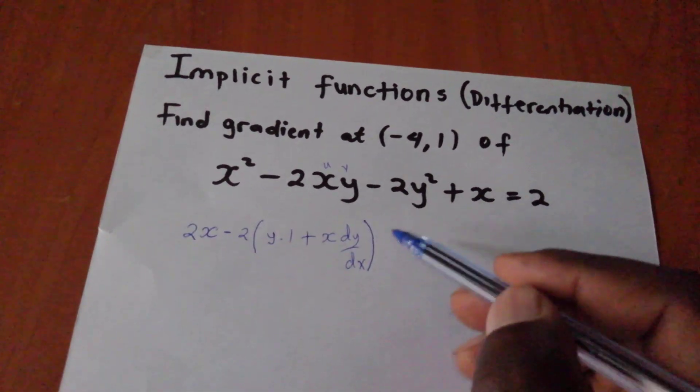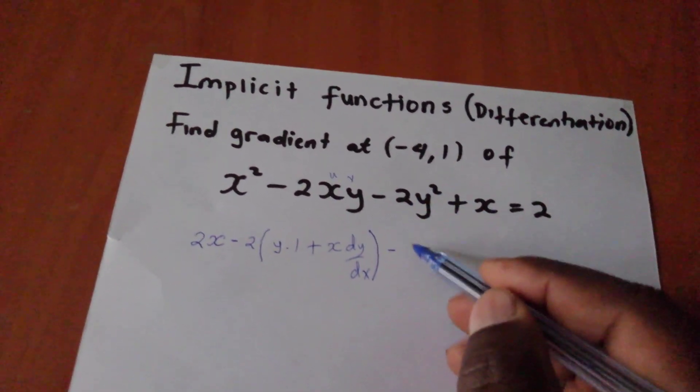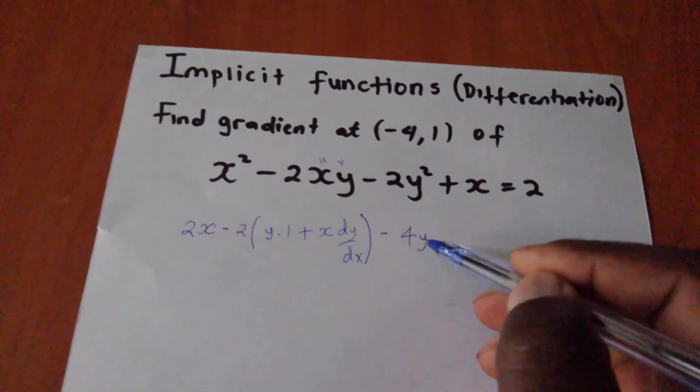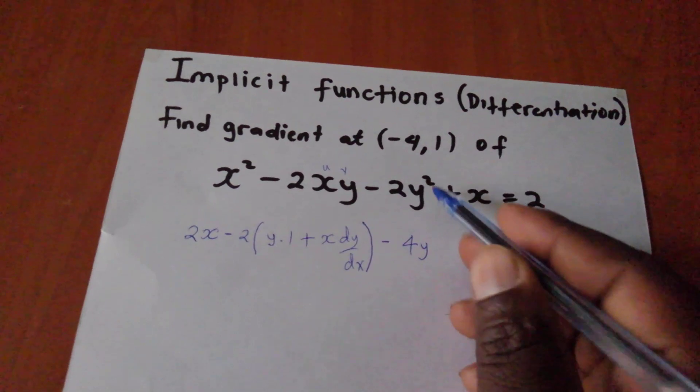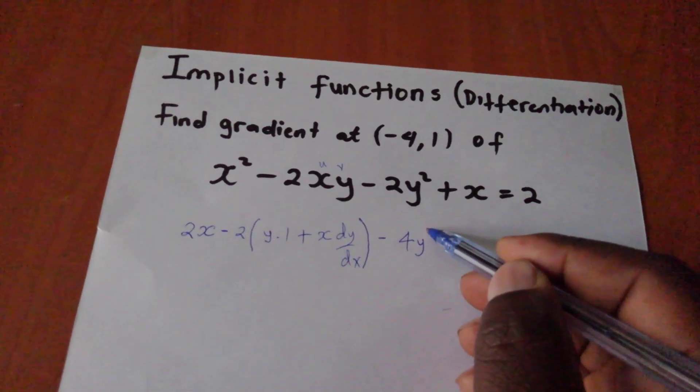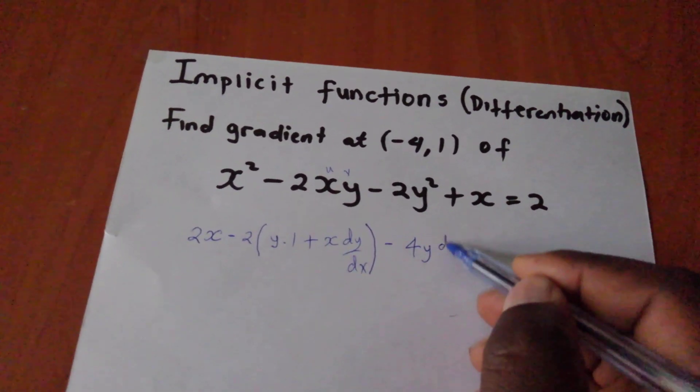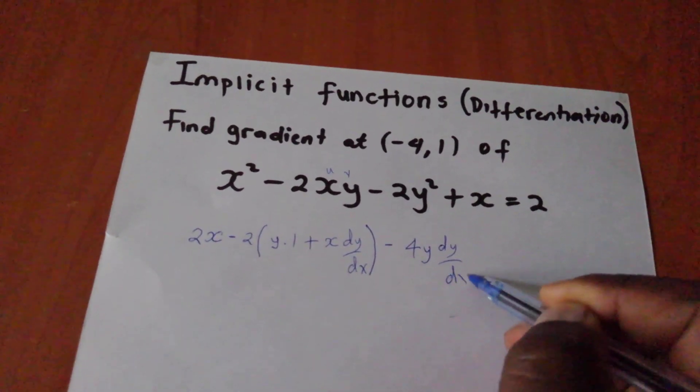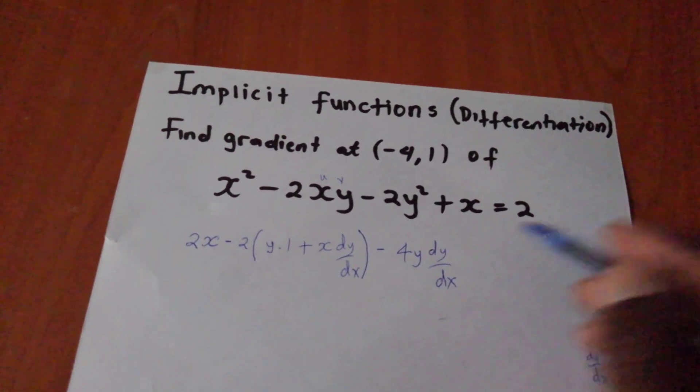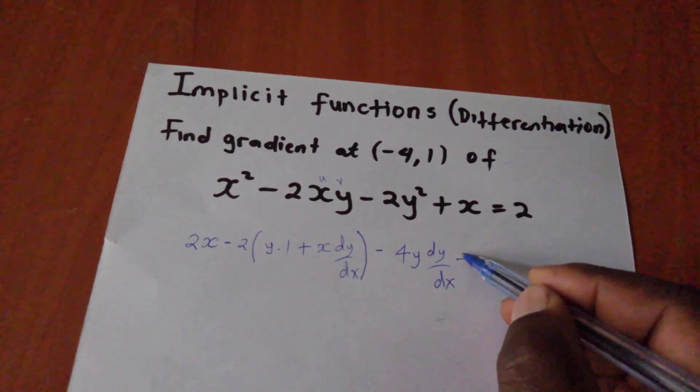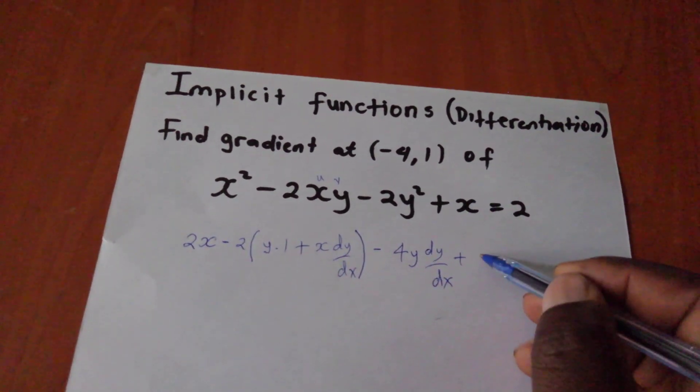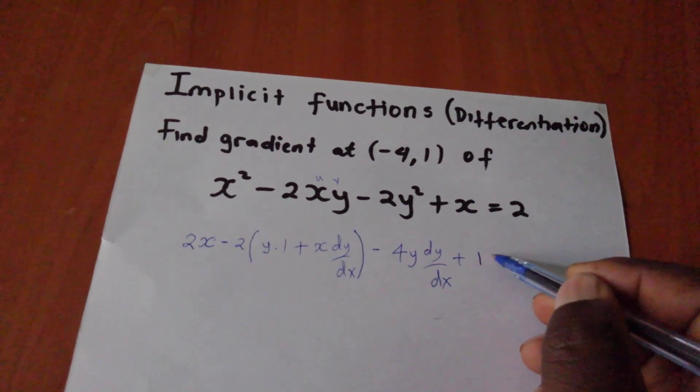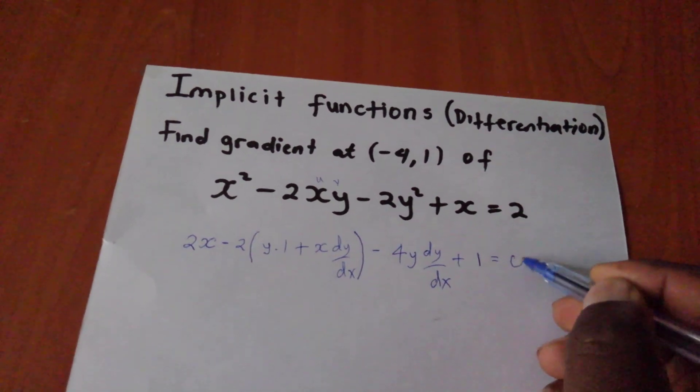So coming to this, you differentiate normally. So here I will have 4y. But 4y to power 1. But since you have y, you will have dy dx. And this x, if I differentiate it, I will have 1. Then if I differentiate this one, I will have 0. I hope you are getting me.